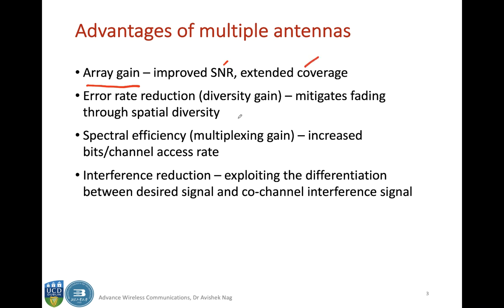Because of multiple antennas, there are other advantages. For example, you can have spatial diversity, which results in a reduced effect of fading due to the wireless channel and a reduction in error rates. Additionally, with multiple antennas you can have multiplexing gain, which provides better spectral efficiency — meaning an increased number of bits per channel can be transmitted.